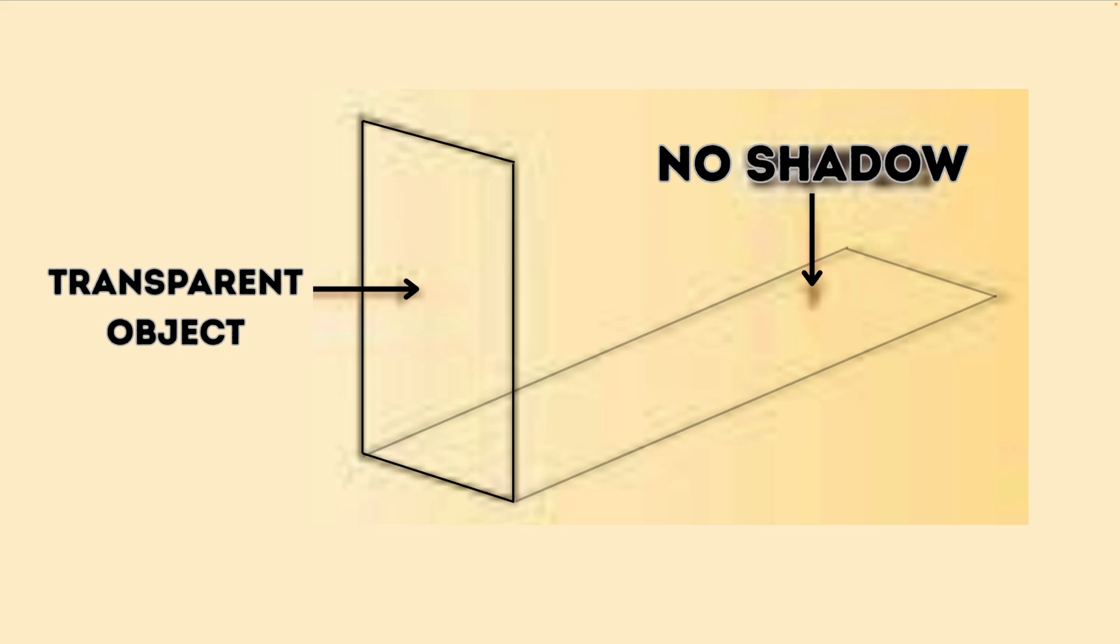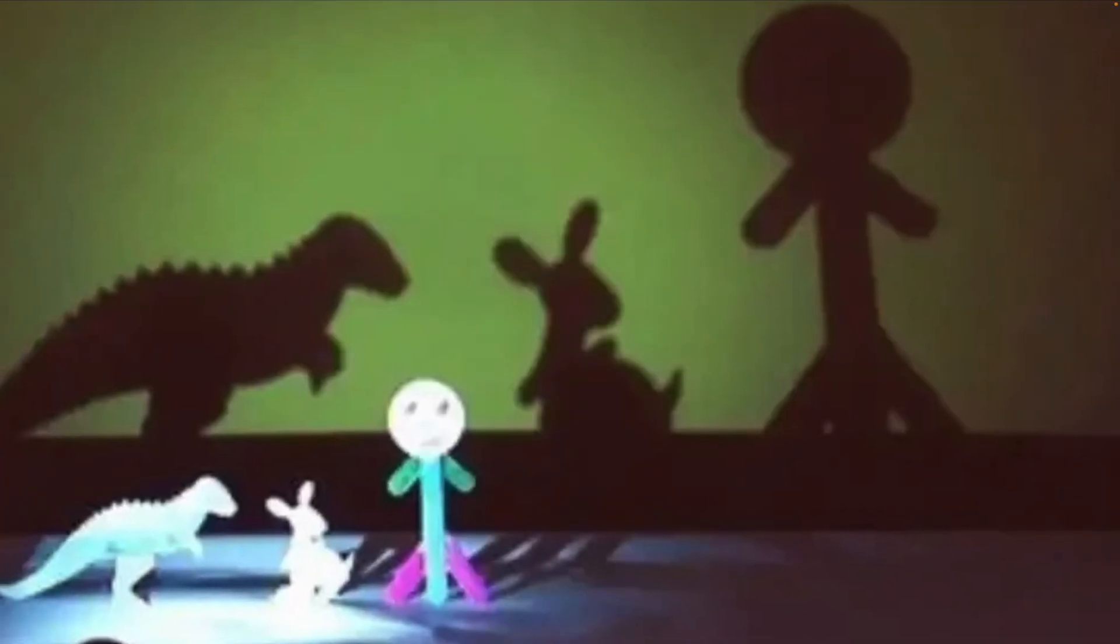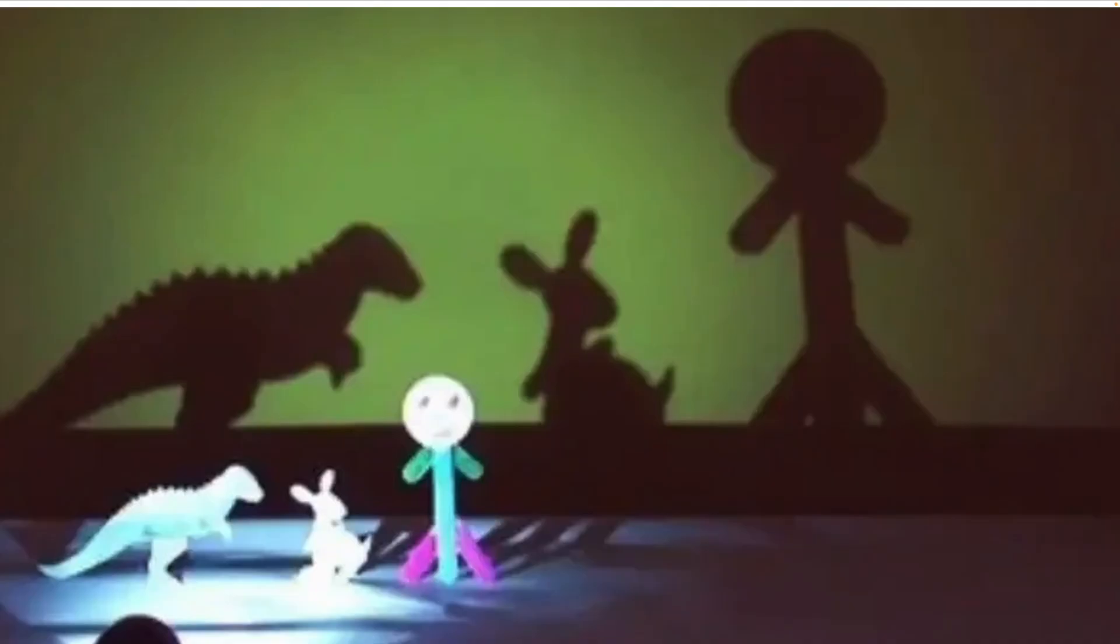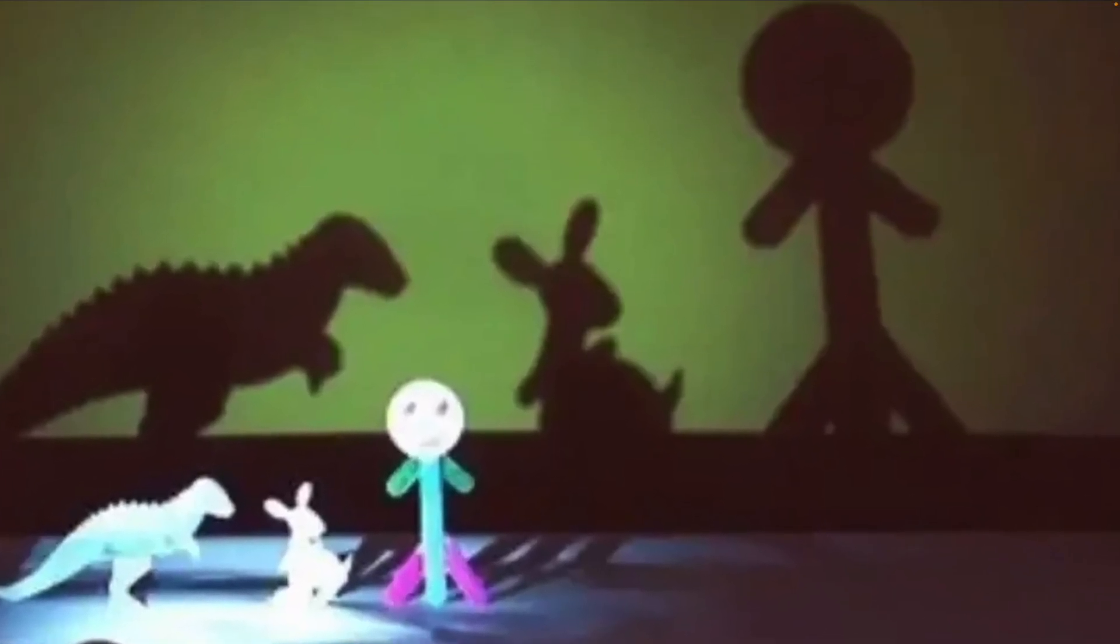Now let's explore what can change the size and shape of a shadow. First, distance from the light to the wall or screen. Next, distance from the wall or screen. Place the toy close to the wall. The shadow looks sharp and clear.